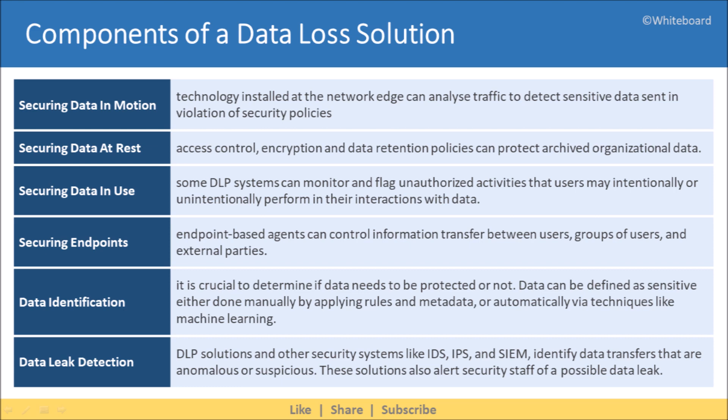Next we have securing endpoints, where endpoint-based agents can control information transfer between users, groups of users, and external parties. Next we have data identification — it is crucial to determine if data needs to be protected or not. Data can be defined as sensitive either manually by applying rules and metadata, or automatically via techniques like machine learning. Lastly, we have data leak detection. DLP solutions and other security systems like IDS, IPS, and SIEM identify data transfers that are anomalous or suspicious. These solutions also alert security staff of a possible data leak.